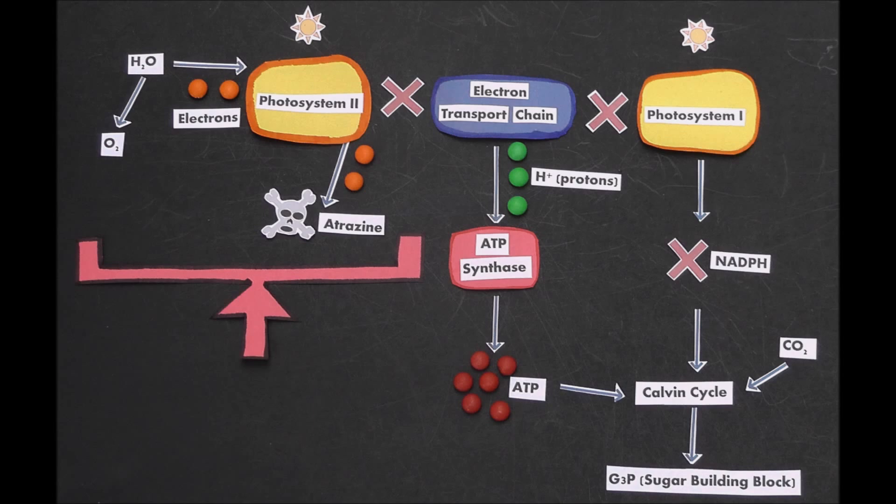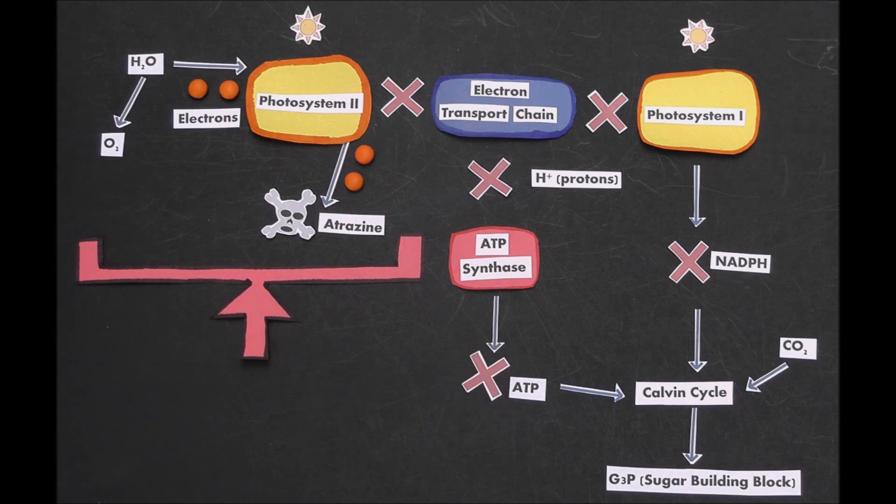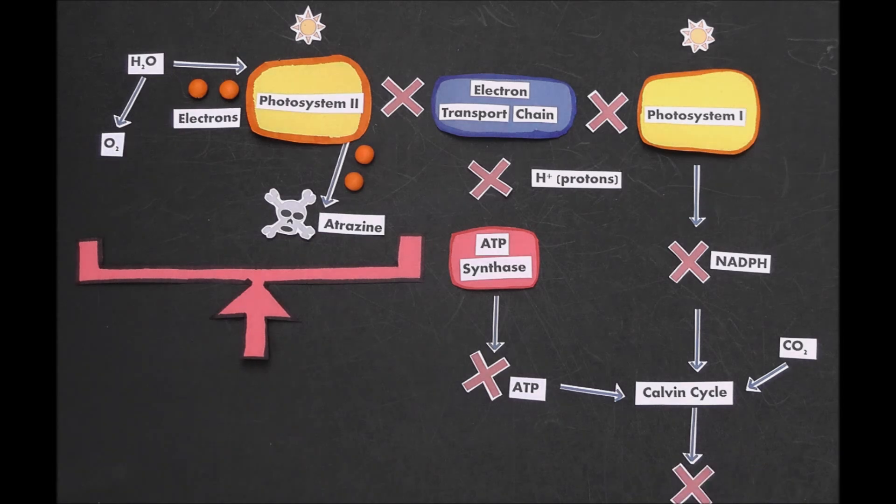If no electrons are being passed along the electron transport chain, then no protons are getting moved around. Without the buildup of protons, the ATP synthase just isn't able to make ATP. So if we can't make sufficient NADPH or ATP, then we don't have the electrons or the energy needed by the Calvin cycle to make the sugar that's needed for the plant to survive.